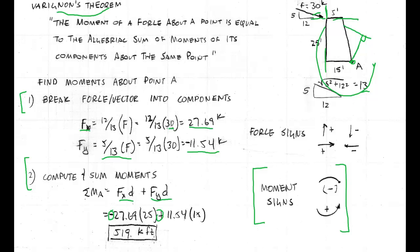So when I do it on the calculator, I get 519 kip feet, or foot kips. Remember our units. That is the power and the example of Varignon's theorem.